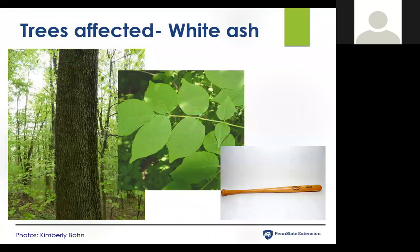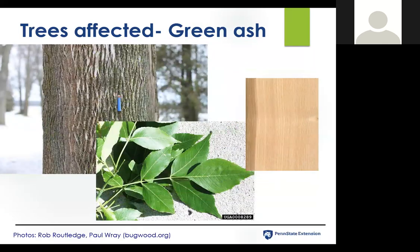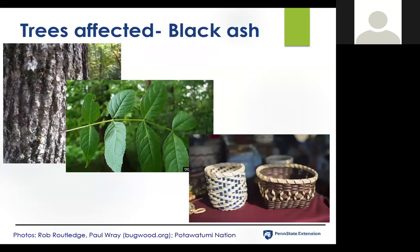Emerald ash borer does affect all of the North American ash trees, but it particularly affects white ash. For some people this is important because of baseball — baseball bats were primarily made with ash wood, one of the harder woods, and that's had a significant effect on the baseball bat industry. It also significantly affects green ash and black ash. Black ash is a wetland species and is very important culturally for a lot of Native American peoples, often used in their basketry, so this has had a pretty significant cultural effect as well.